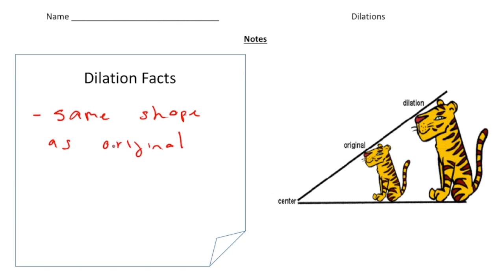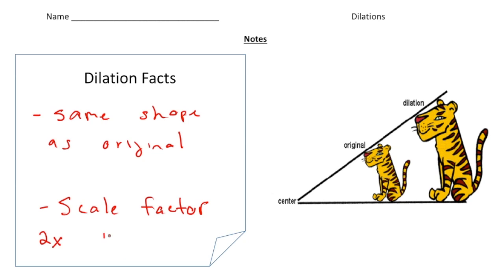You're going to hear about something called a scale factor. A scale factor could be, for example, twice as big, or half as big, or 10 times as large as the original.